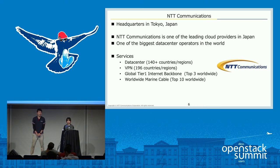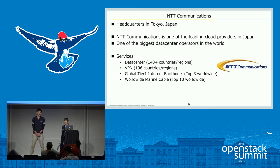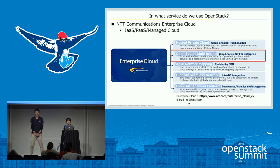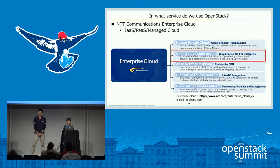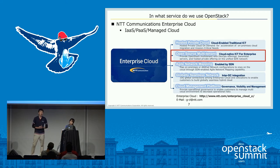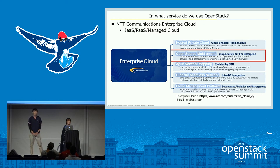Our services include data centers in 140 countries, VPN in 196 countries, a global T1 internet backbone, and worldwide marine cable. Regarding which service uses OpenStack — we use OpenStack in enterprise cloud. We provide hosted private cloud with Melantis, and we also provide public cloud. Today we talk about public cloud.